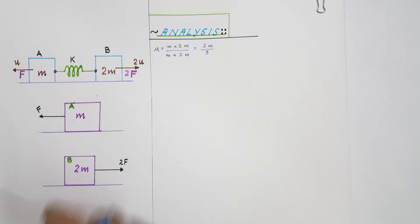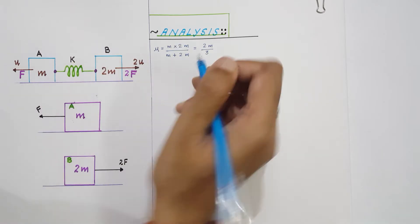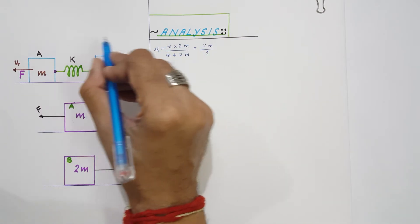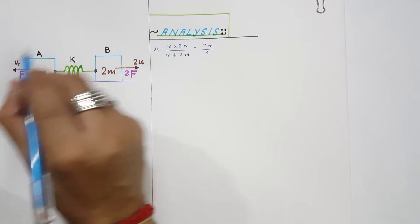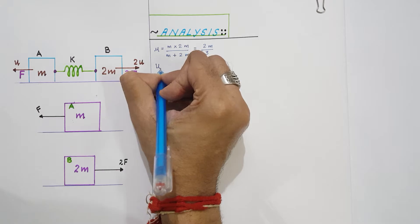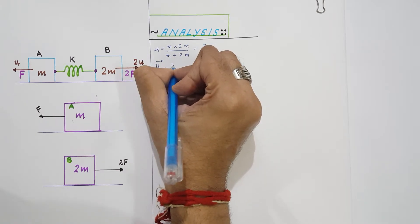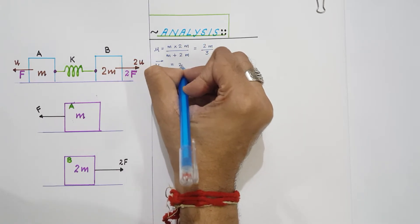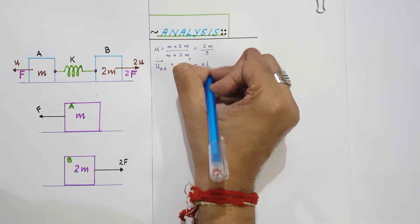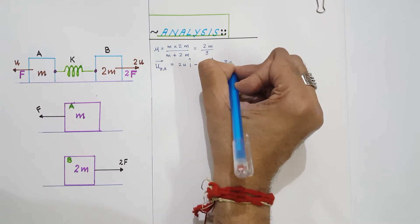The reduced mass of the system is 2m/3. Now, what is the initial relative velocity of the blocks? The initial velocity of block B with respect to block A is 2u î minus u(-î), which comes out to be 3u î.